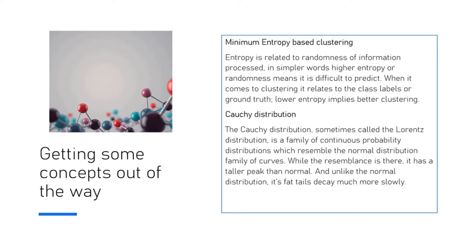Cauchy distribution, interestingly, has been around for a very long time. It's called a Lorentzian distribution and is from the family of continuous distribution property. It resembles a normal distribution curve, but there's a difference. The difference comes in that it has a taller peak than normal and has a fat tail decay. A lot of the findings come from using the fat tails for different purposes. It's a fat tail decay but slowly trimmed earlier.